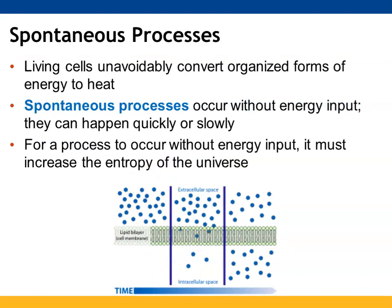Cells will have some forms of their energy converted to heat. When processes occur that don't require any energy input, they are considered to be spontaneous — some are slower, some happen more rapidly. Diffusion would be an example of a spontaneous process, and if it's going to happen without requiring energy, it will result in the entropy of the universe increasing.